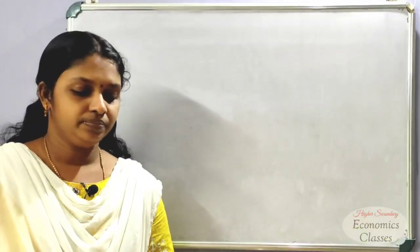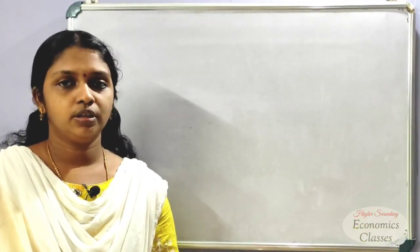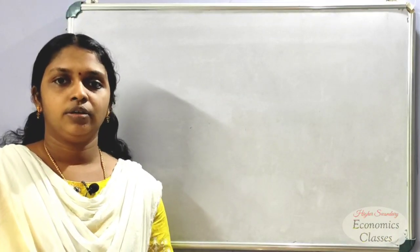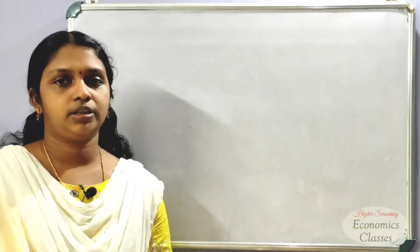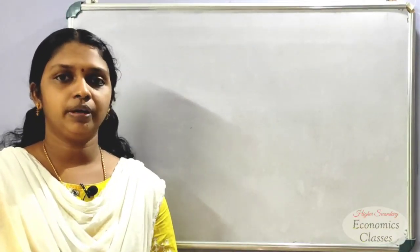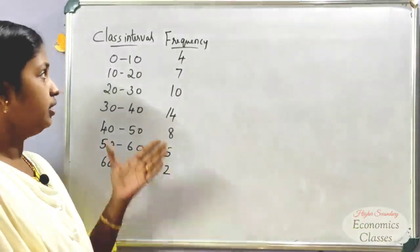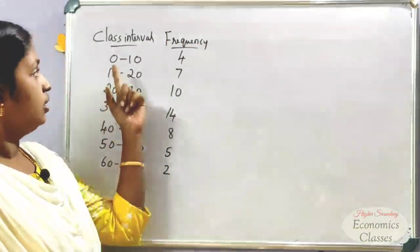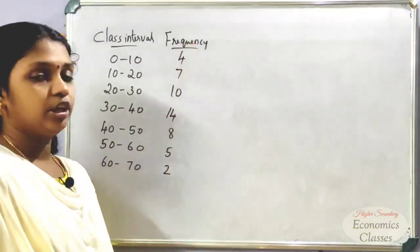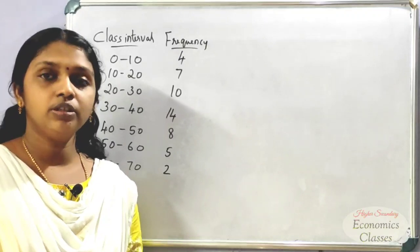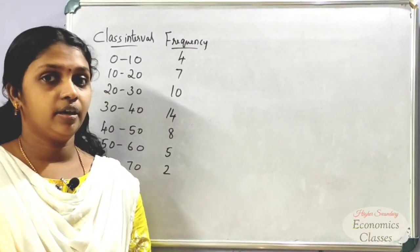We are going to calculate mean, median, and mode. Now we will look at a question about data using students in class intervals with frequency. The class intervals go from 0 to 10 up to 60 to 70. We need to find the arithmetic mean, median, and mode.